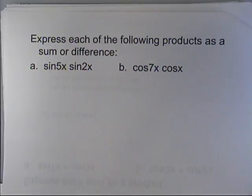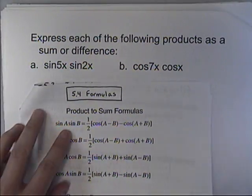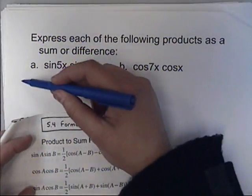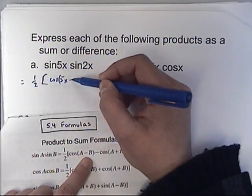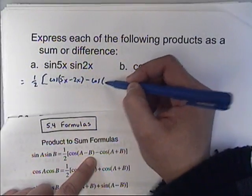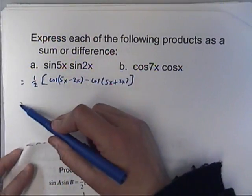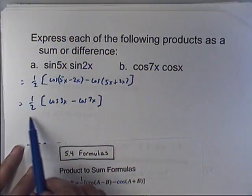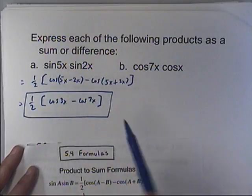If I want to express these as a sum or a difference, I recognize that this matches the format of sine of A times sine of B. So sine(5x) times sine(2x) equals one half times the cosine of A minus B — which is 5x minus 2x — minus the cosine of A plus B — which is 5x plus 2x. That simplifies to one half times the quantity cosine(3x) minus cosine(7x). Now I've written it as a difference rather than a product.